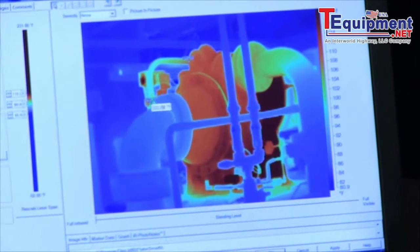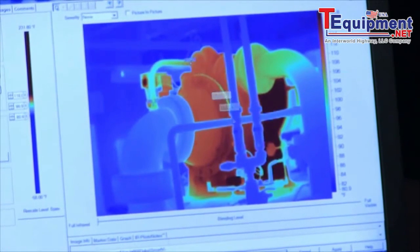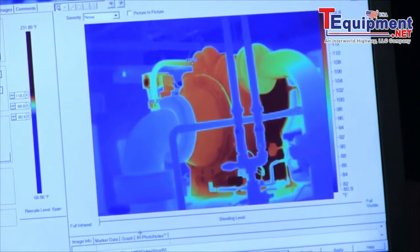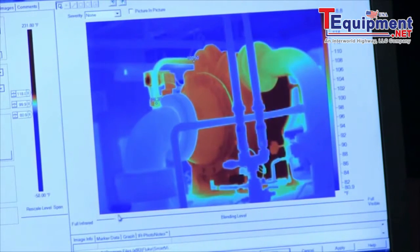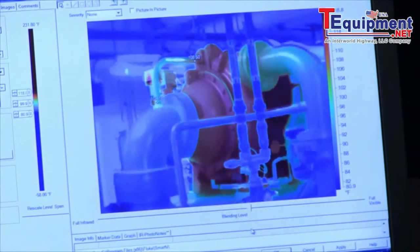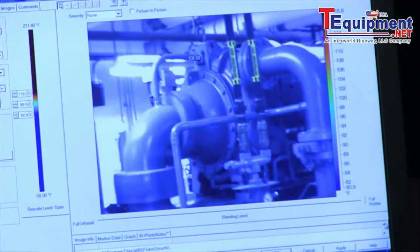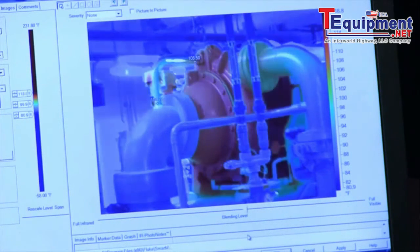So we're zoomed in here, you can see some of the markers that we've indicated temperatures. I can actually scroll this back on this blending line, all the way from full infrared to full visible, or anywhere in between.